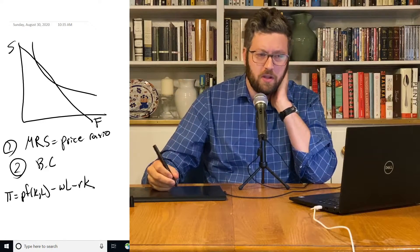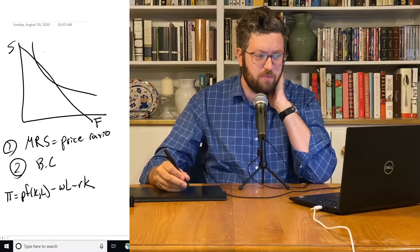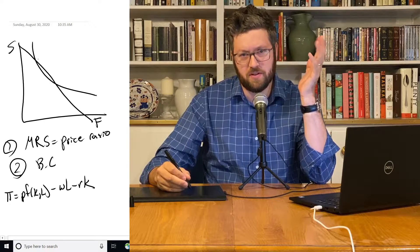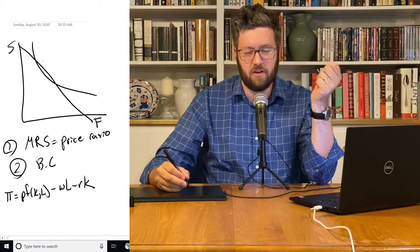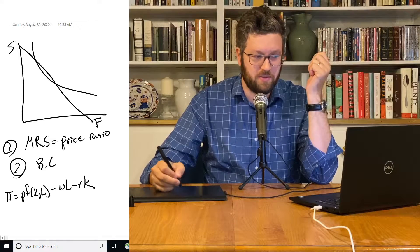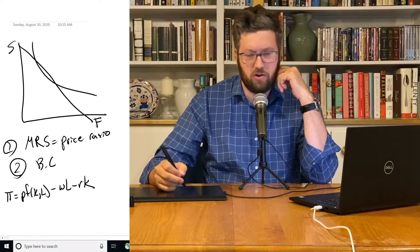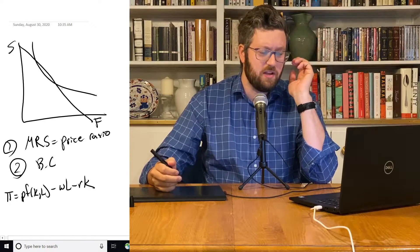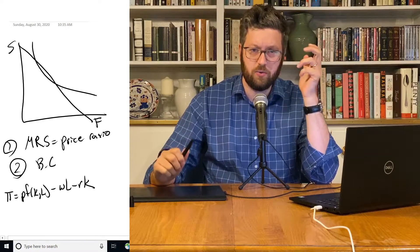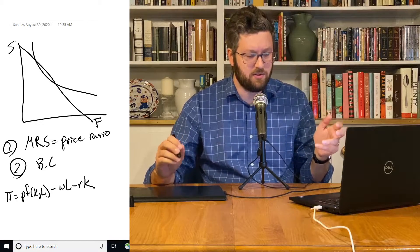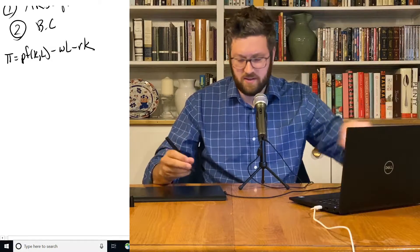Even though consumers and firms both have sort of similar representations of their preferences, like with these isoquants or indifference curves, and isocost curves are kind of like budget constraints, there is one really important difference between the two. And that's that the consumer faces